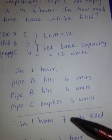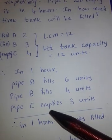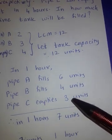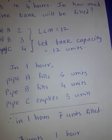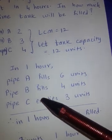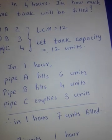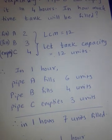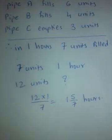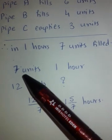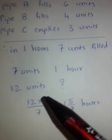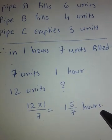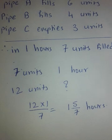When all three pipes are open, Pipes A and B fill 6 + 4 = 10 units, but Pipe C takes out 3 units. So the net fill per hour is 6 + 4 − 3 = 7 units. In time and work we simply add, but here Pipe C is an opposite action so we subtract. So 7 units are filled in 1 hour. Total tank capacity is 12 units, so time to fill = 12 ÷ 7 = 1 and 5/7 hours. That is your answer.